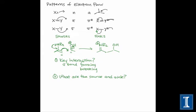So by applying these labels to the electron flow, we can see and organize the underlying patterns. So how do we identify the source and the sink after identifying this key interaction?